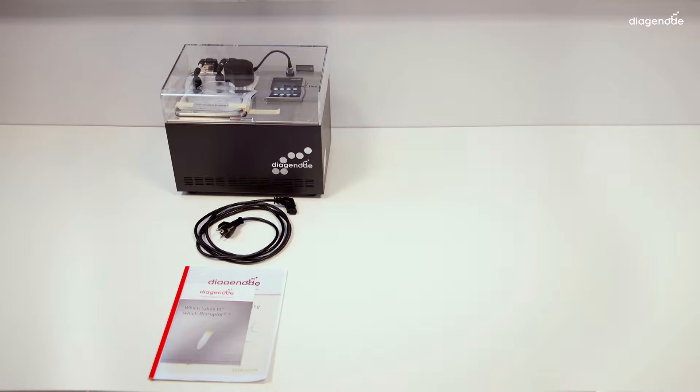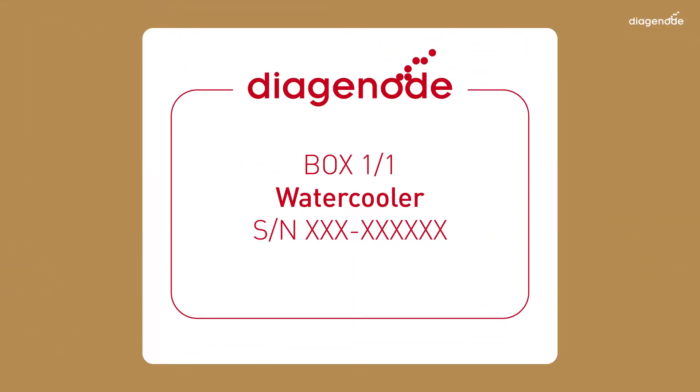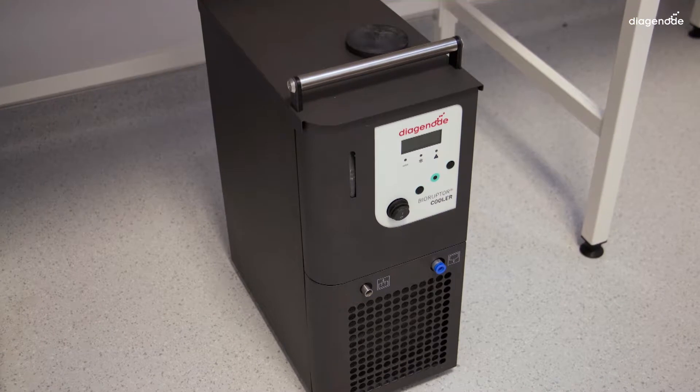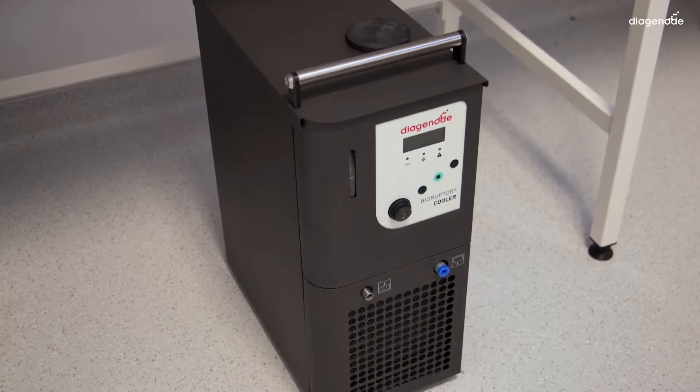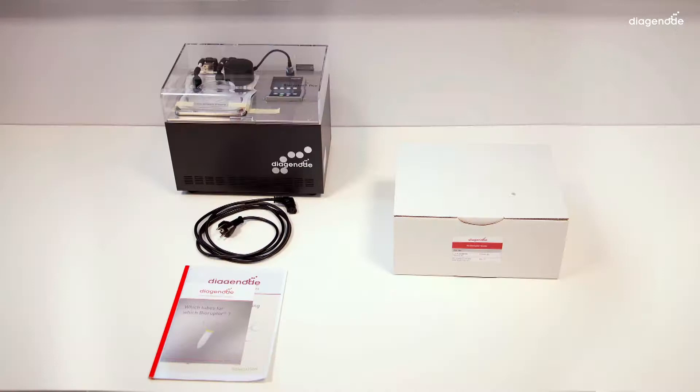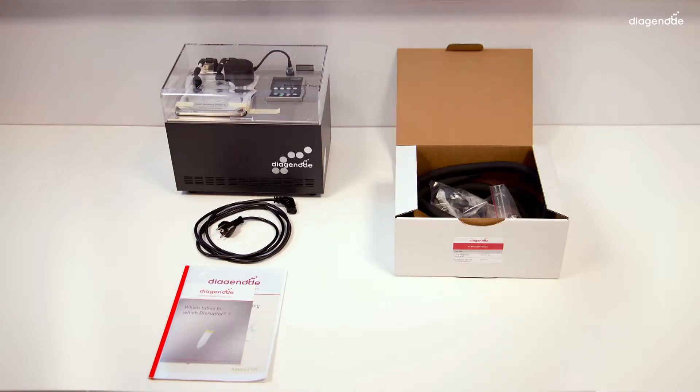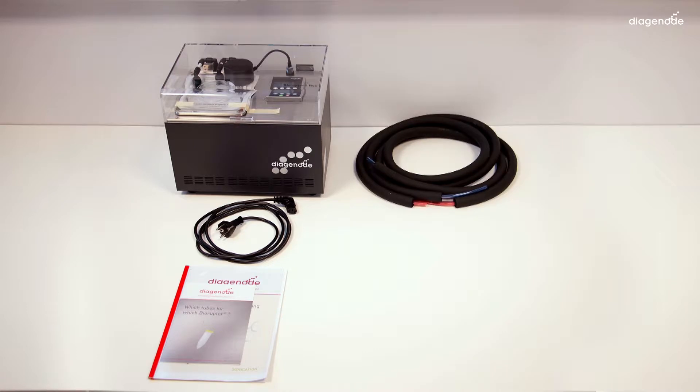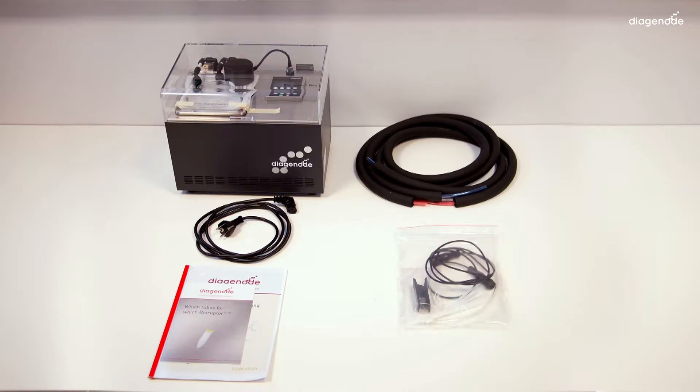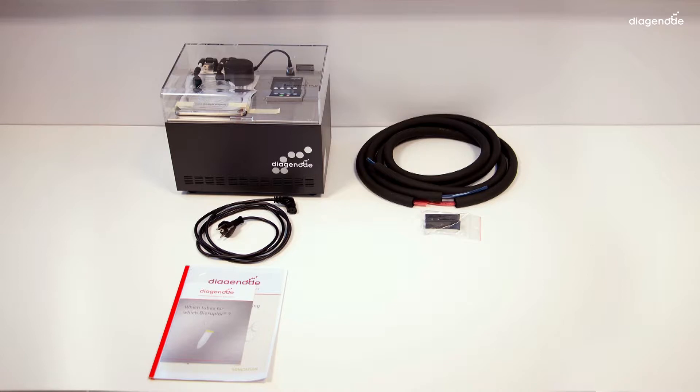Now open the water cooler box, which contains the water cooler system itself. And open now the kit for your chiller. You'll find inside the tubings - two tubes, one red and one blue.